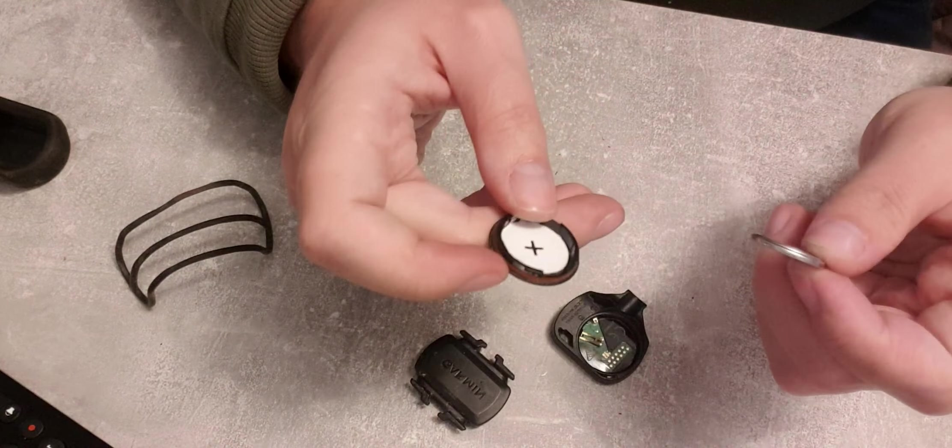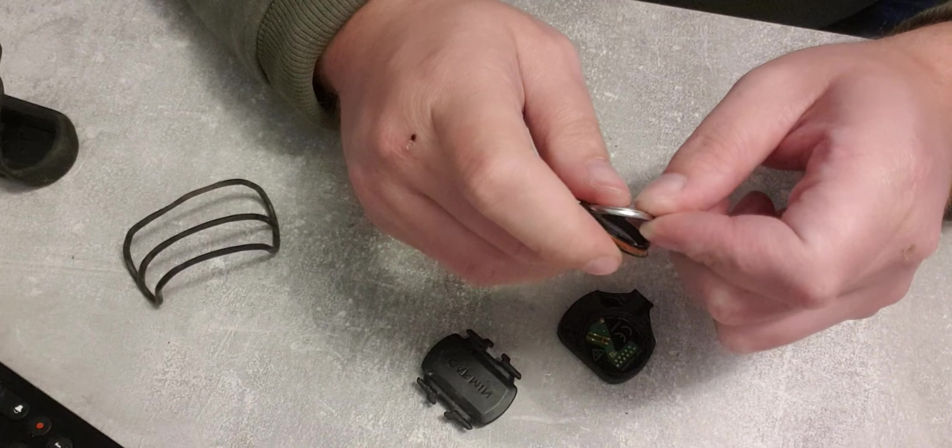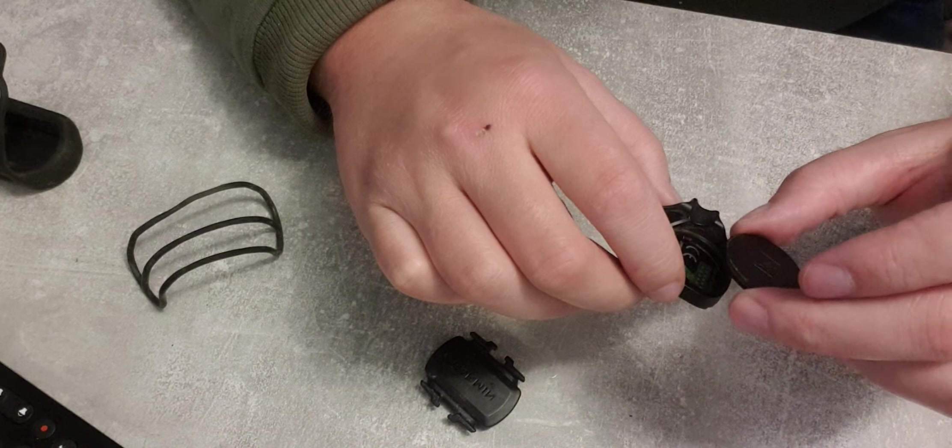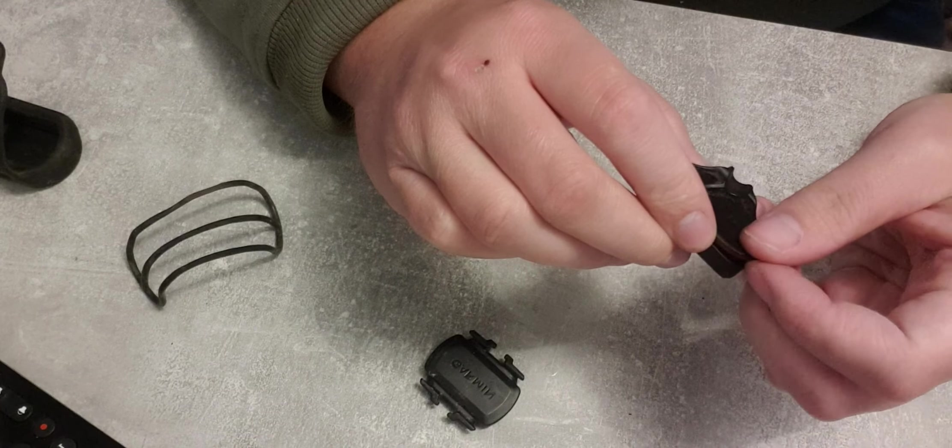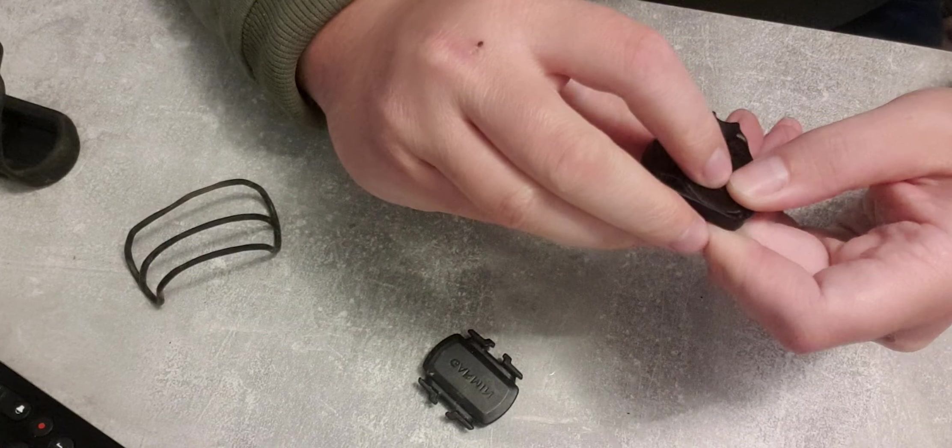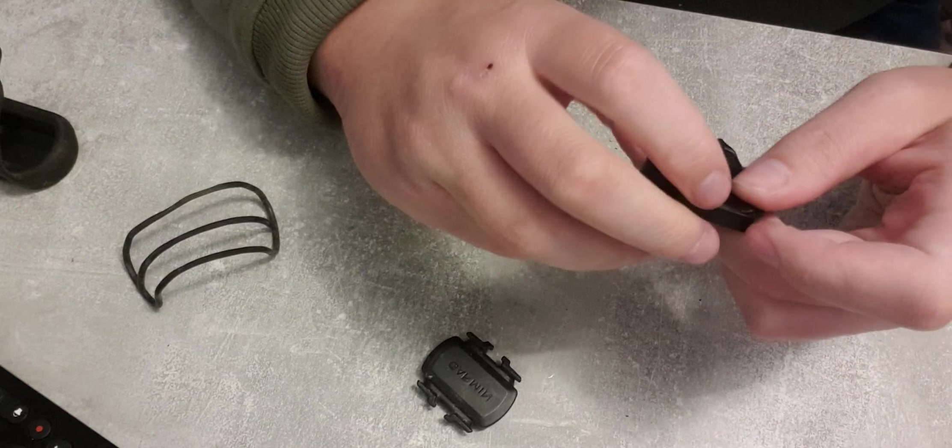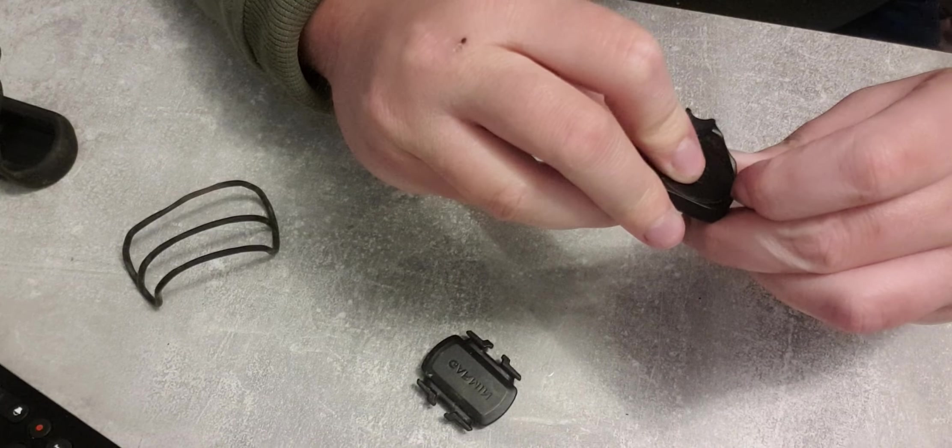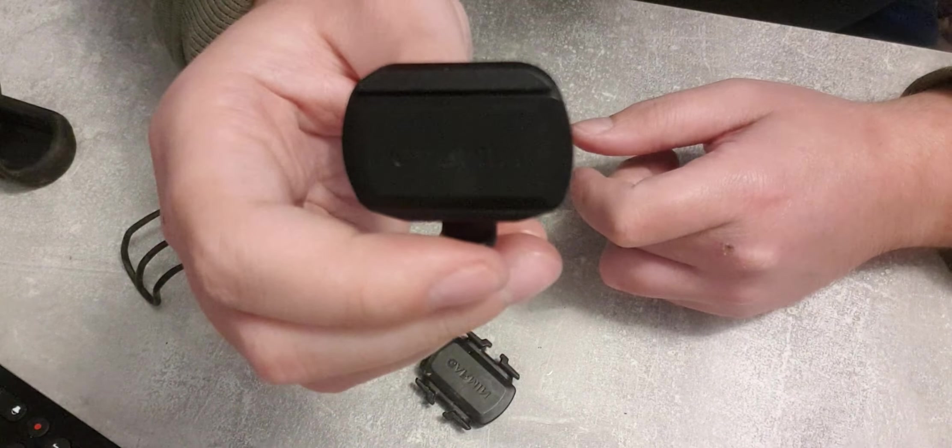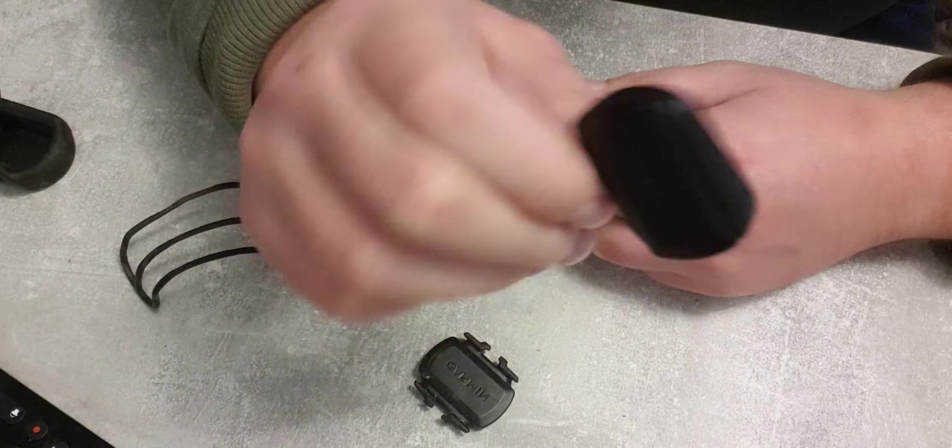And then pull it out. Because this is a new one, I could just put it back in. Put it on the lock thing, push it down, and turn it. Then it flashes, and then you got it.